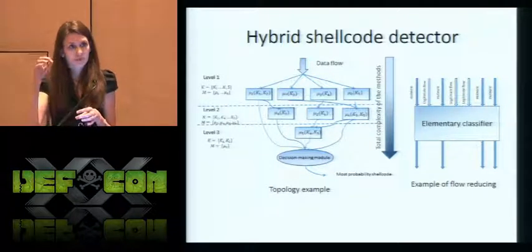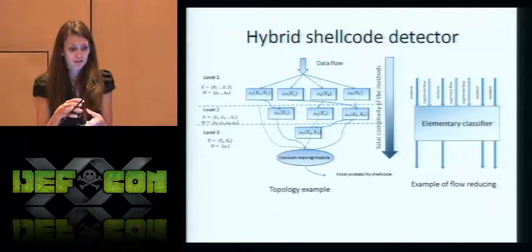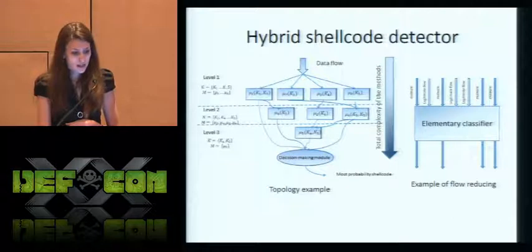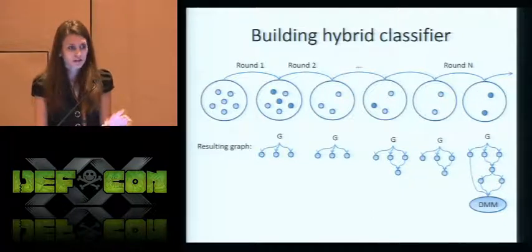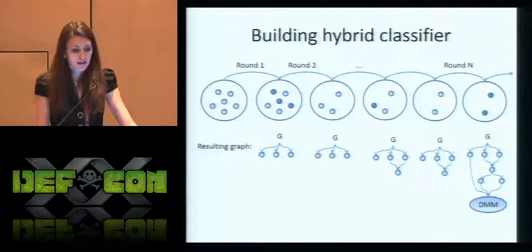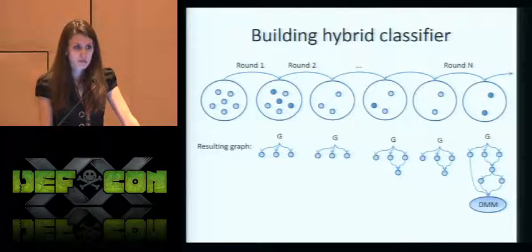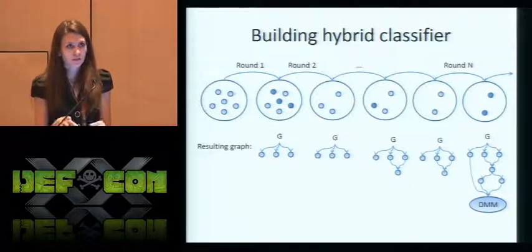If some classifier concludes a flow to be legitimate, that flow doesn't pass to the other classifiers. And if we put classifiers that run faster at the top of such a topology, we can reduce legitimate flow as fast as possible. Given the set of elementary classifiers, at the next step we choose those which provide complete coverage of shellcode classes detected by the entire set and which are optimal in terms of false positive rate and execution time. We then construct a lower result graph and repeat that step, ending up with a decision-making model that analyzes all output from elementary classifiers and concludes the flow to be legitimate or malicious.